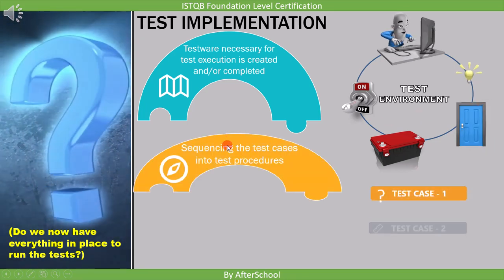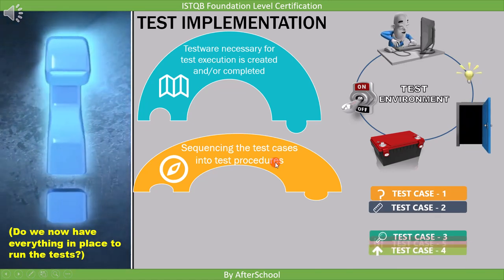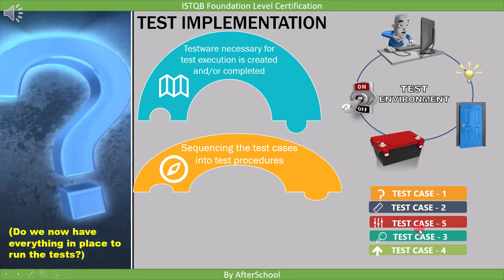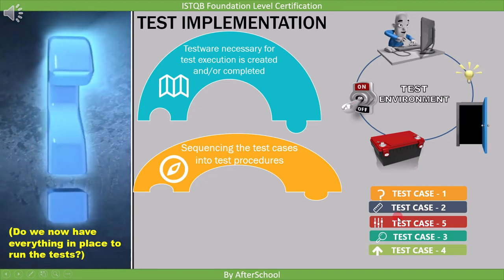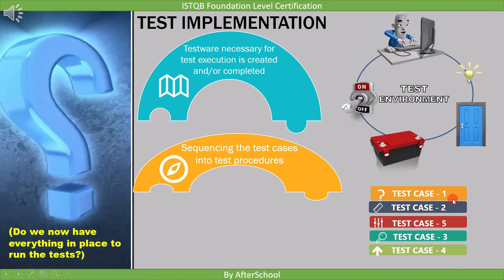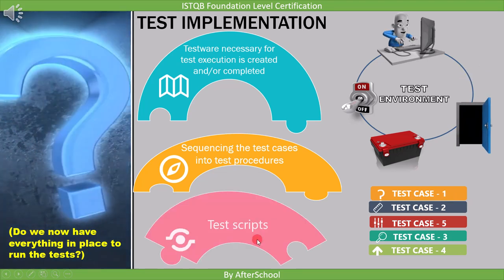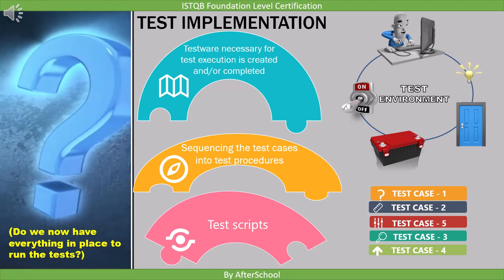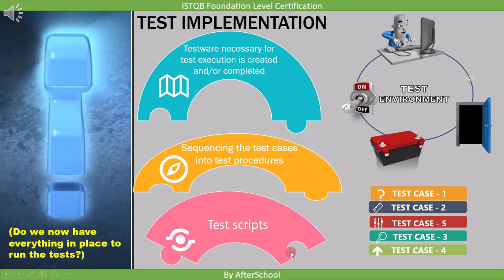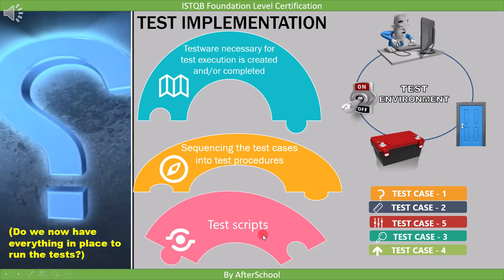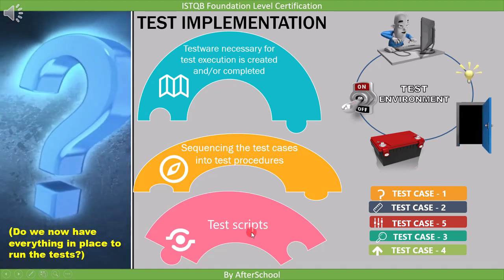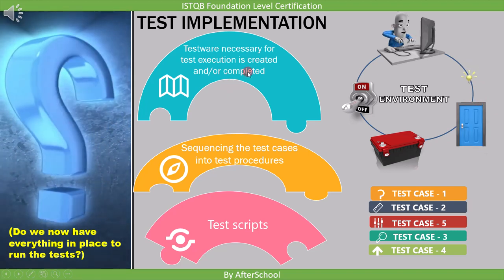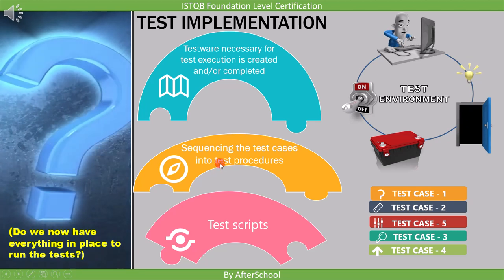The second point is sequencing the test cases into test procedures. During test implementation, we sequence the test cases based on priority or risk — this determines the order in which we will execute them. The last point relates to test scripts, which is applicable only for automation testing, where test cases are converted into test scripts so they can be automatically executed.